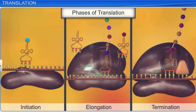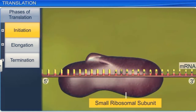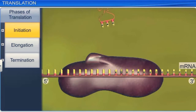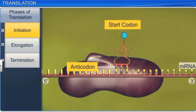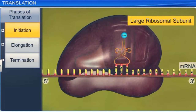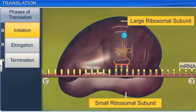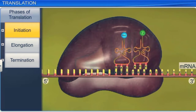Translation occurs in three phases: initiation, elongation, and termination. In the initiation phase, the small subunit of the ribosome moves along the mRNA strand to locate and bind to the start codon AUG. The first aminoacyl tRNA, carrying the amino acid methionine with an anticodon UAC, binds to the start codon at the P site. After which, the large ribosomal subunit binds to the small ribosomal subunit containing the mRNA. Another aminoacyl tRNA now binds to the A site of the large ribosomal subunit, and the first peptide bond is formed between these amino acids.